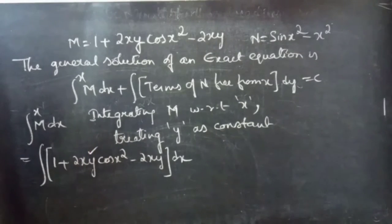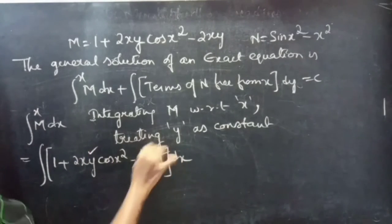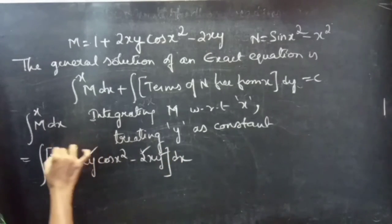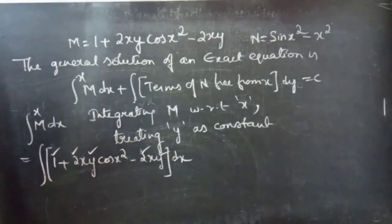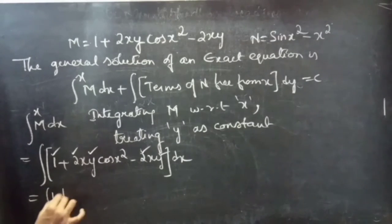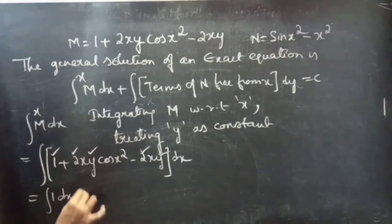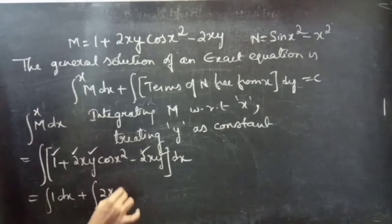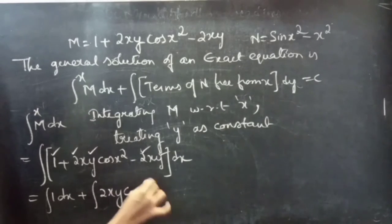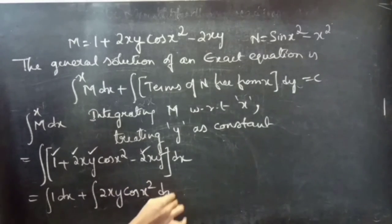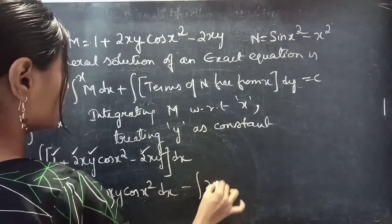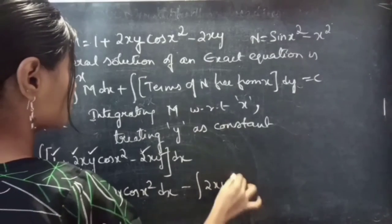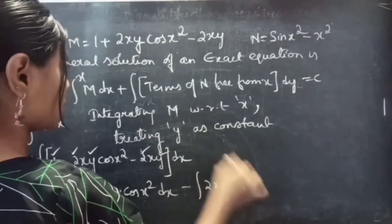M with respect to x, treating y as constant: ∫(1 + 2xy cos(x²) - 2xy) dx. Here y is constant and 2 and 1 are constants, so this equals ∫1 dx + ∫2xy cos(x²) dx - ∫2xy dx.